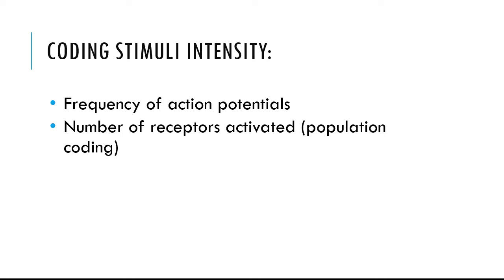As long as the stimulus is present and receptors don't adapt, they continue to activate the receptor, which continues to communicate to the afferent nerve, which will continue to generate action potentials. Additionally, within a sensory area, not only do action potentials help code the intensity, but the number of receptors in a given area — referred to as population coding — also matters. If more receptors in a given area are activated, that is interpreted as a larger stimulus.